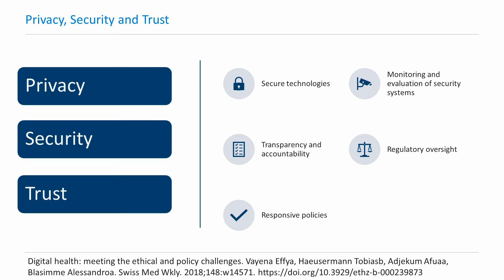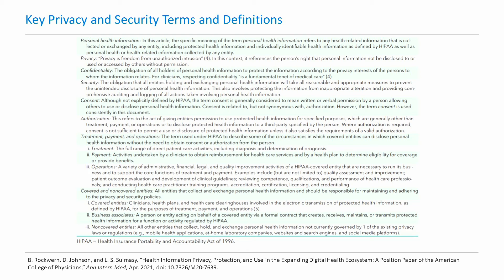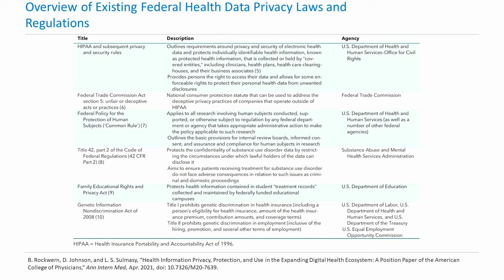With technological advancements, the existing constructs of anonymization, consent, and notice can become inadequate. For instance, consent for data cannot encompass all possible data uses. In addition, there is no surety that anonymization will still hold for advanced analytics and evolving technologies. Ways of addressing these concerns include implementation of secure technologies, periodic monitoring and evaluation of security systems, development of transparency and accountability, and oversight mechanisms with responsive policies that can protect common interest. These are some key security and privacy definitions, and additional resources on existing federal health data privacy laws and regulations are also available.